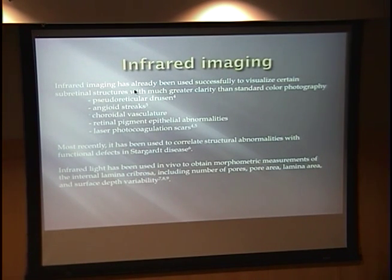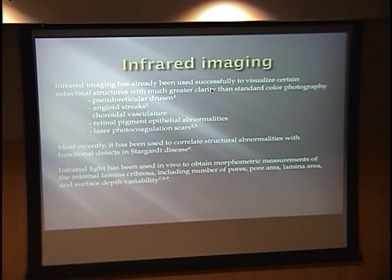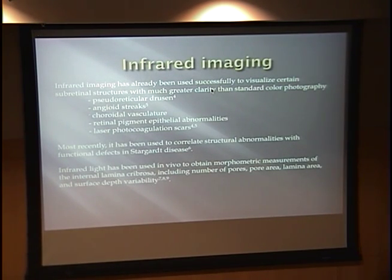Infrared imaging has already been extensively studied. Several studies have shown it provides much greater clarity for structures including pseudo-reticular drusen, angioid streaks, choroidal vasculature, retinal pigment epithelial abnormalities, and laser scars. One interesting study on Stargardt disease found that not only were abnormalities viewed more clearly, but they correlated to disease progression with greater specificity than other imaging modalities. Another study examined the internal lamina cribrosa, producing morphometric measurements of the pores, pore area, lamina area, and surface depth variability.